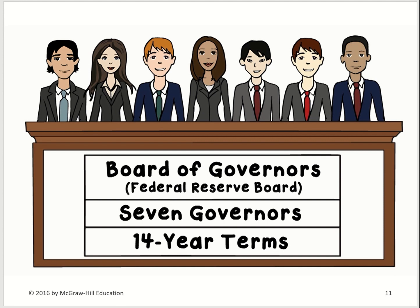Think about how long these Board of Governors serve compared to other officials: Presidents serve a four-year term, Senators serve a six-year term, and House Representatives serve a two-year term. But Board of Governors each serve a 14-year term. The reason is we want the Board of Governors to be independent of the current political environment — acting in the best interest of the economy, not in the best interest of any ruling party. So these governors are mostly independent.